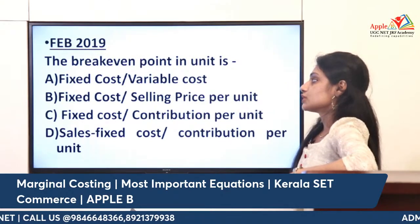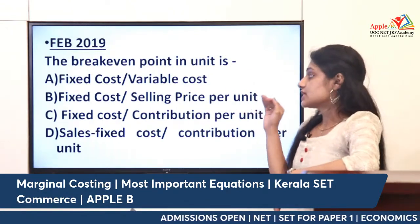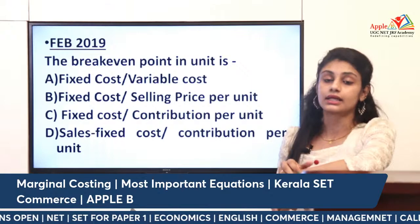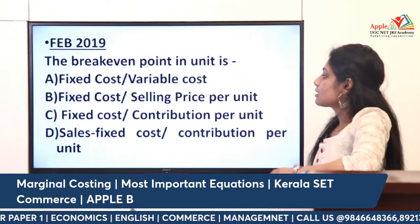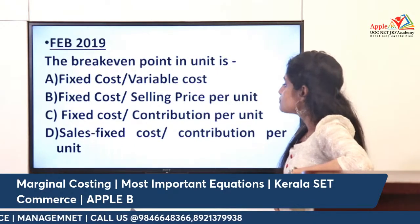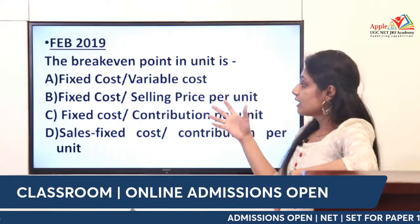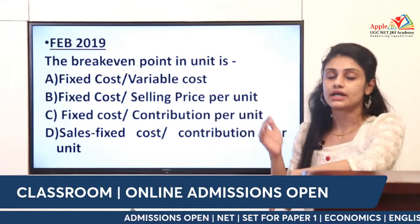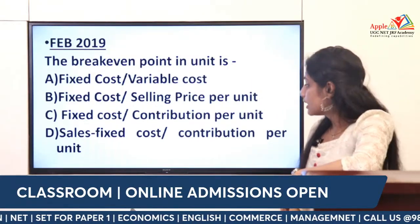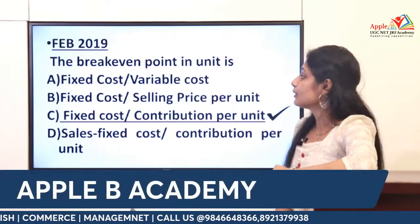February 2019 question: The break-even point in units — which equation do you use? The options include fixed cost divided by variable cost, fixed cost divided by selling price per unit, fixed cost divided by contribution per unit, and sales minus fixed cost divided by contribution per unit. The numerator is fixed cost and denominator is contribution per unit, so the correct answer is option C: fixed cost divided by contribution per unit.